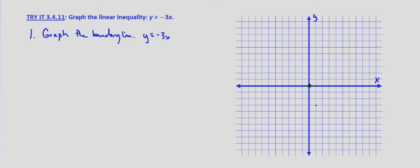And you could verify that. I mean, this is an x value of 1, so negative 3 times 1 is negative 3. So it would be 1, negative 3.